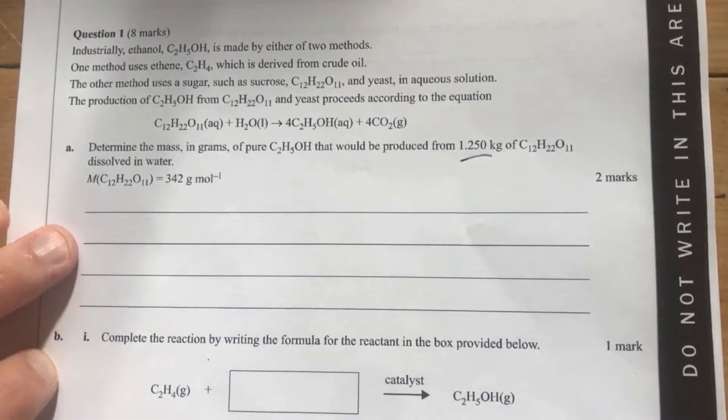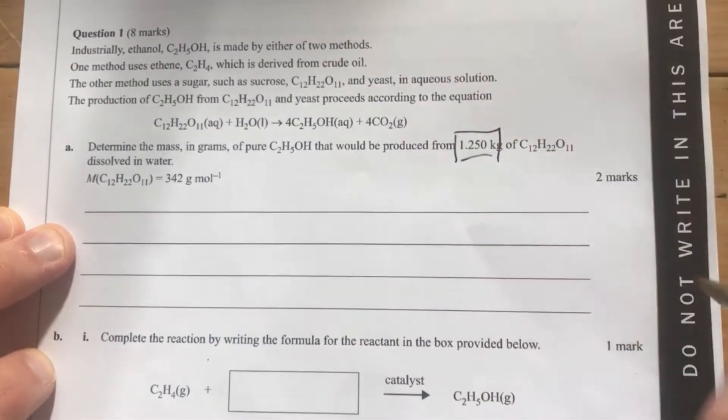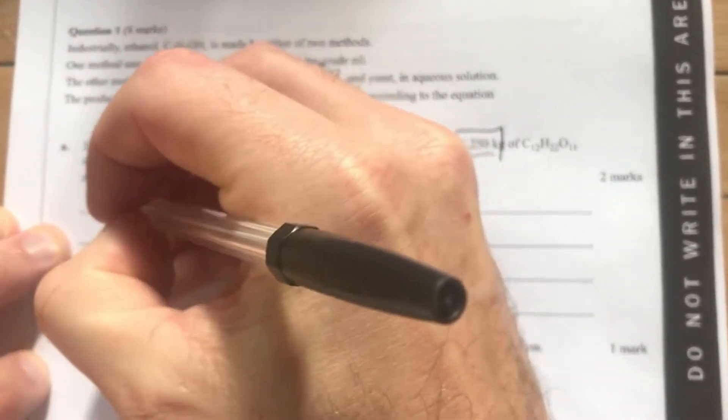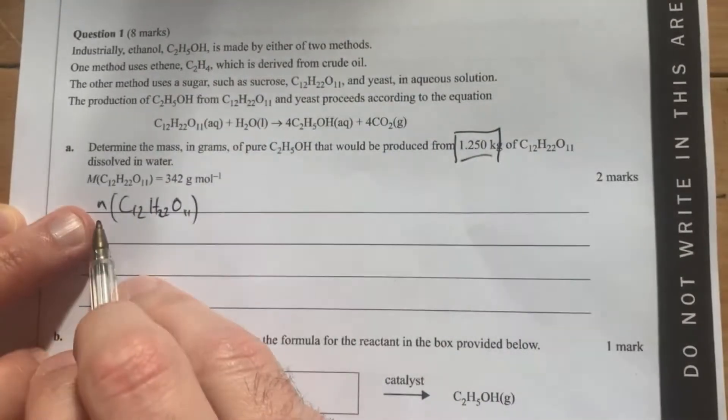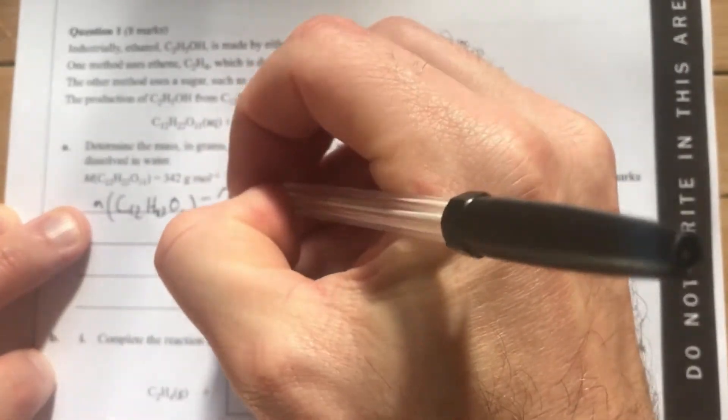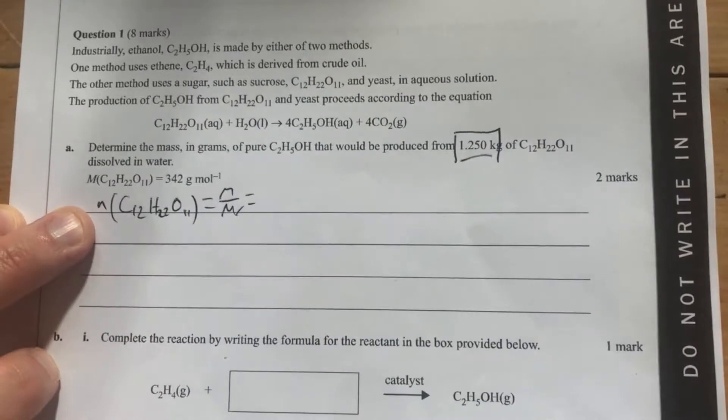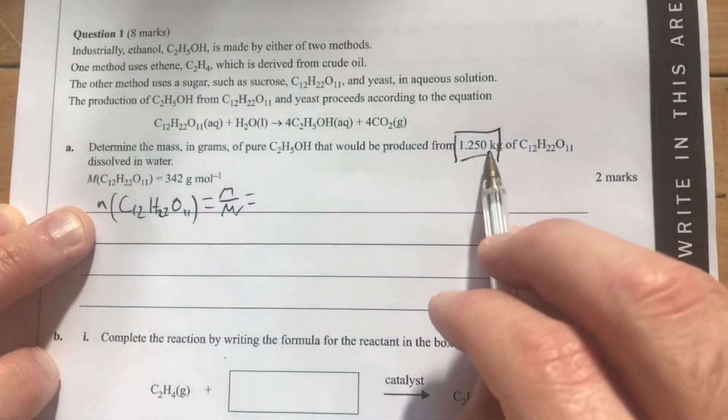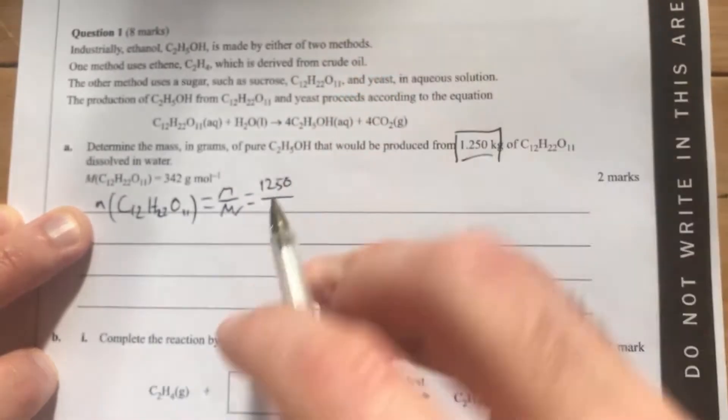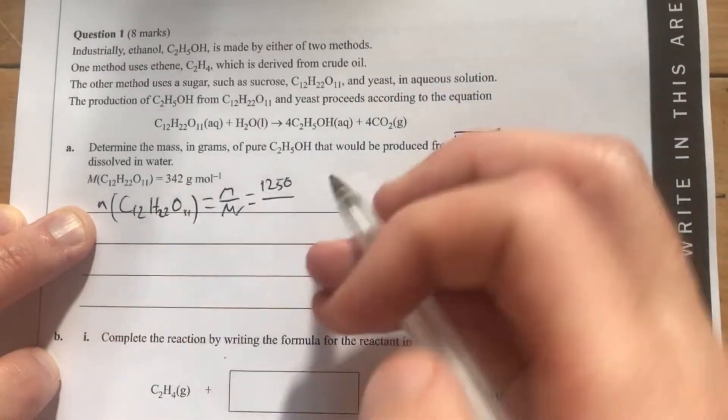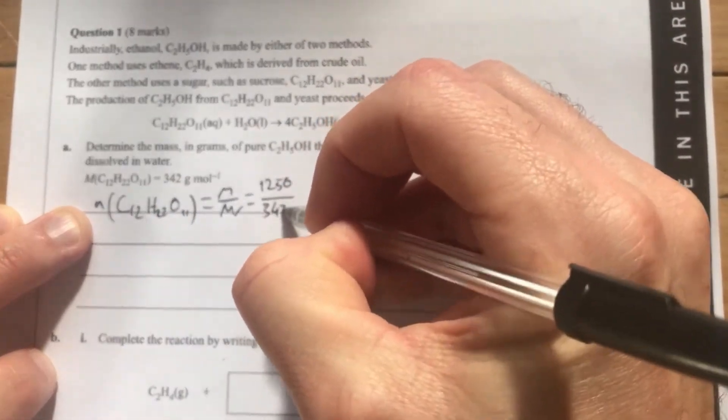I'm going to start off, as I always would, and every single time I see a mass, I'm going to find the number of moles of my sucrose. I'm going to write it as number of moles equals mass over molar mass. Then I'm going to put in my value. This is kilograms, so I'm going to change it into grams and divide it by the molar mass, which luckily they have given to me here.